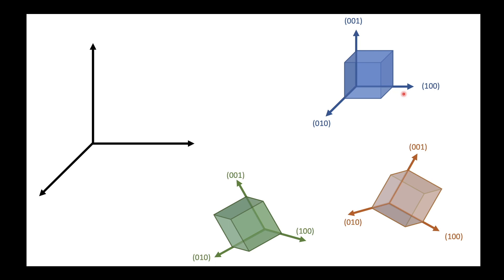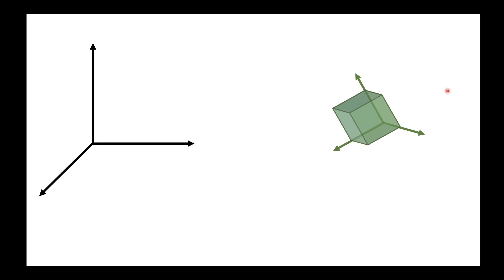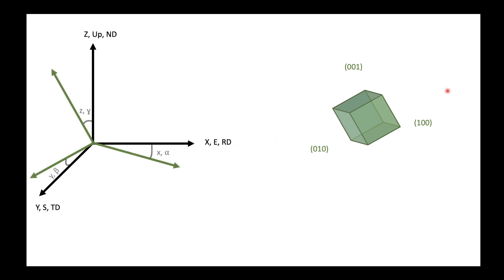We also need a set of axes for our reference frame, chosen to be orthogonal — these could be x, y, z, or east, south, and up, or rolling direction, transverse direction, and normal direction, or simply the axes of the laboratory room in which you are working. Once we have defined axes for both the lab and the crystal, we project them and measure the angles between them. We then have three angles — alpha, beta, gamma — which give us the orientation of this particular grain with respect to the defined axes.